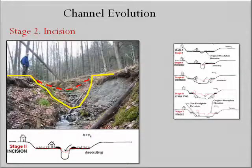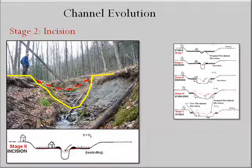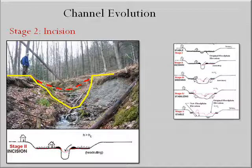Stage two of the evolution process is the incision stage, in which a change in the river or watershed results in increased flow power, causing the channel to erode its bed downward. This down-cutting or incision of the channel results in still more capacity to contain flood flows, which in turn results in further increases in flow power and channel incision. In the example shown in the figure, the disturbance that increases the flow power is the berming of the channel, which traps flood flows and their erosive energies in the channel.